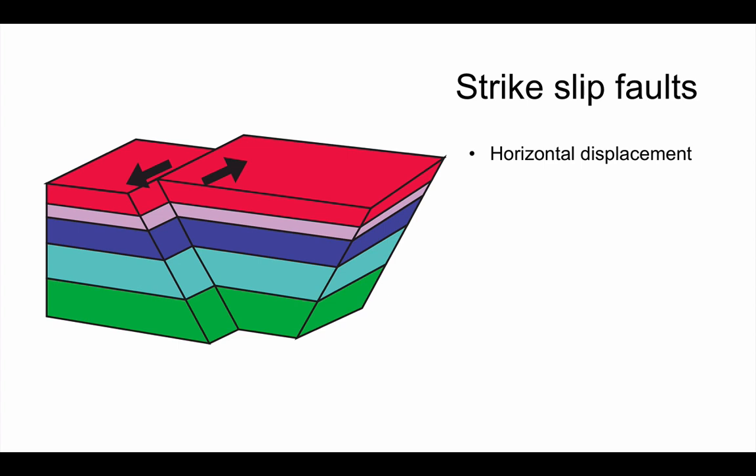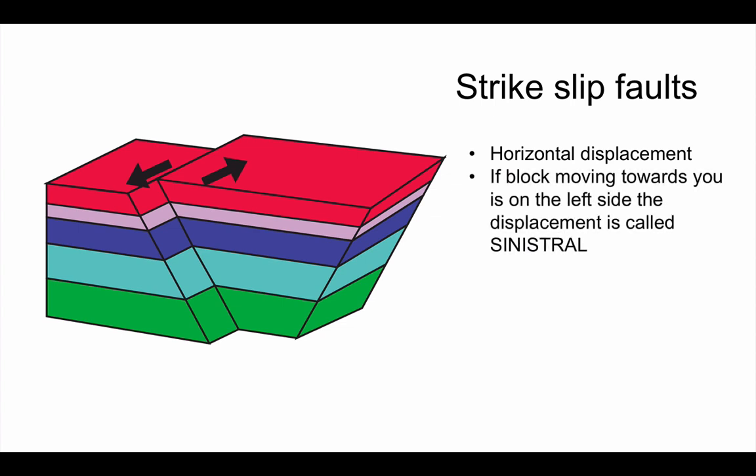So our descriptions of these as upthrow, downthrow, hanging wall, footwall, really doesn't apply. Here we use terms to describe the actual movement of the fault, the actual displacement. So in this case, as we can see on the block diagram, you can see that the block that's moved closest to the viewer is the left-hand side block.